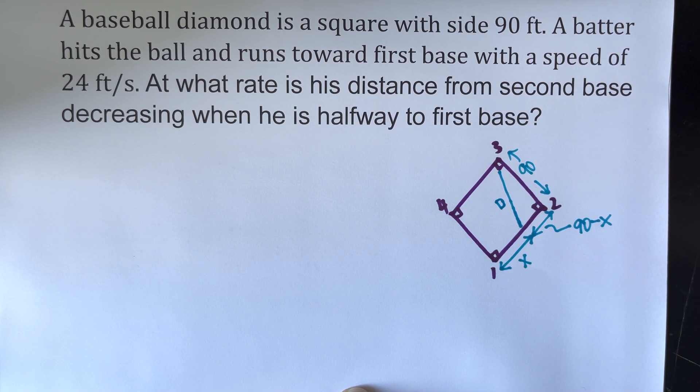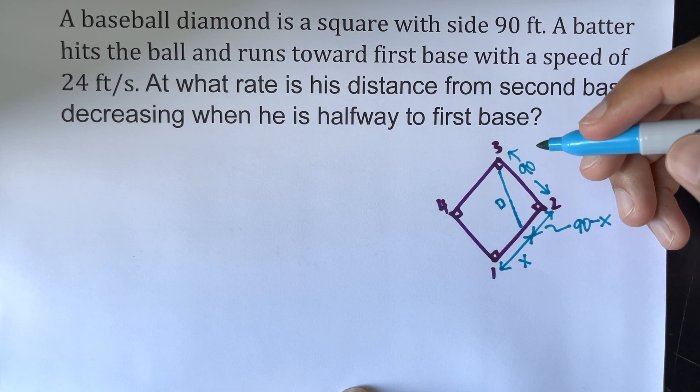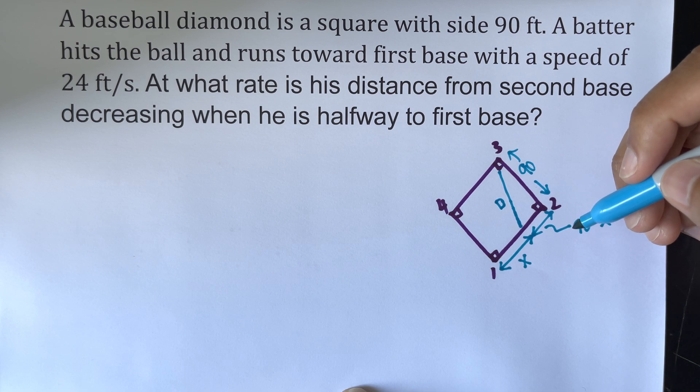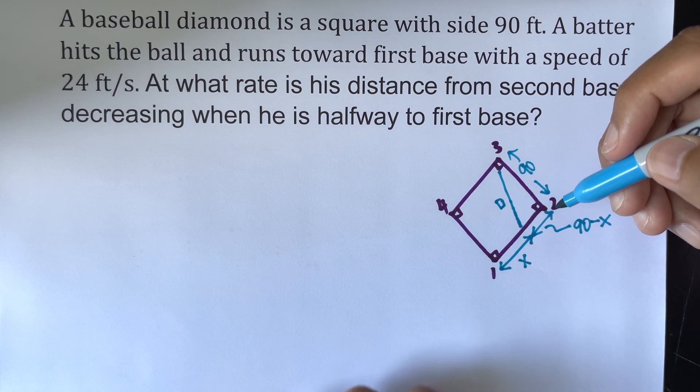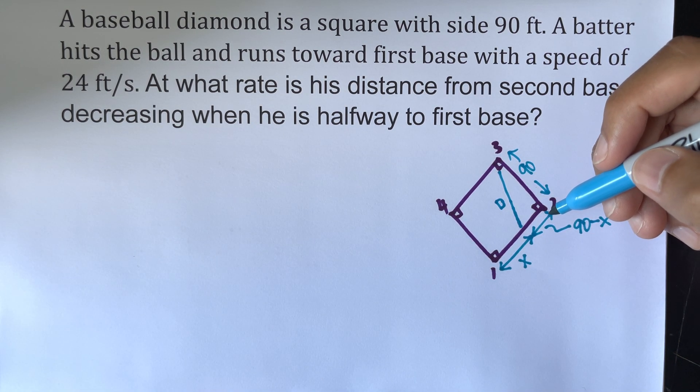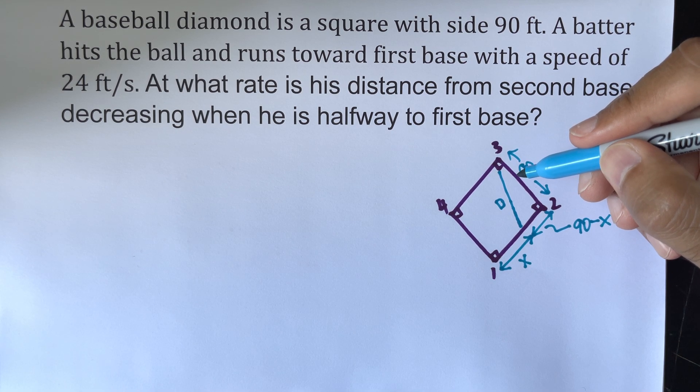Okay, so as you can see, it's forming a right angle triangle. So we're going to let x equal some distance the batter has run at time t, and d being the distance to second base at time t.